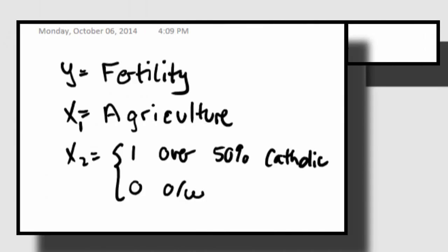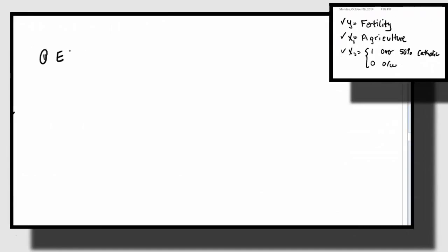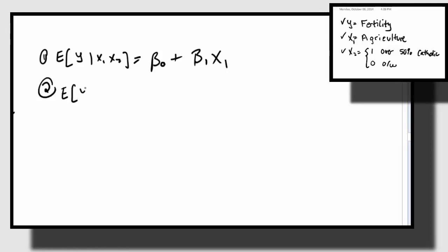Let me describe some models we could fit. Y is fertility. X1 is the percent of the province working in agriculture. X2 is a binary variable where it's one if the province is over 50% Catholic and zero if the province is majority Protestant. Consider Model 1, where we model the expected Y given X1 and X2 as an intercept plus a slope times X1. That would just be a single line, disregarding the religion of the province entirely.